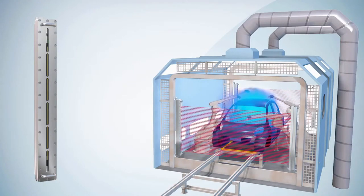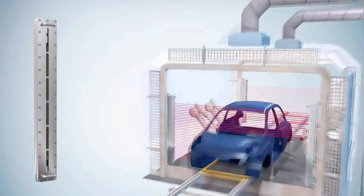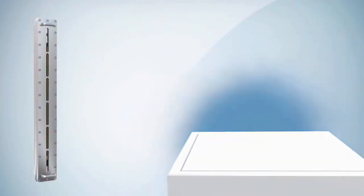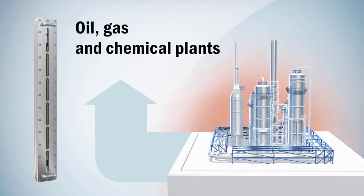Explosion proof safety light curtains are required due to the presence of flammable vapors from the painting process. Other examples include oil, gas, and chemical plants where light curtains can be used to detect personnel entering prohibited areas.